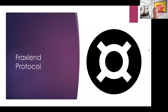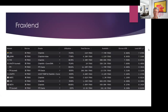Our next protocol is Frax Lend — we mentioned it briefly in the stablecoins lecture. Frax Lend is built within the Frax Finance ecosystem. It uses pairs: you put collateral assets from the left column and can borrow only the FRAX stablecoin.